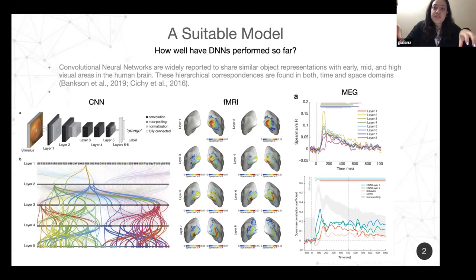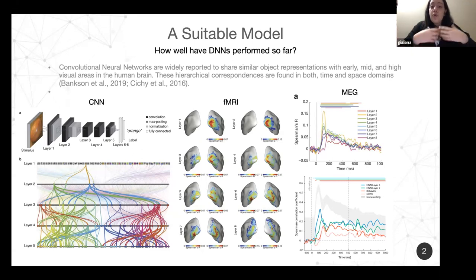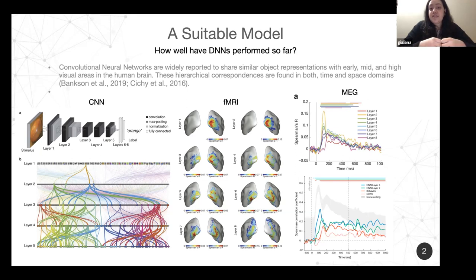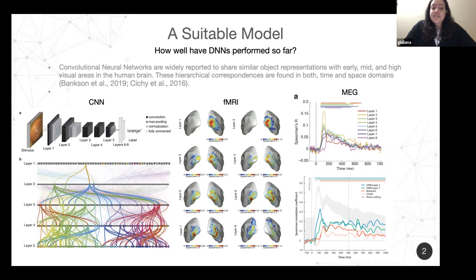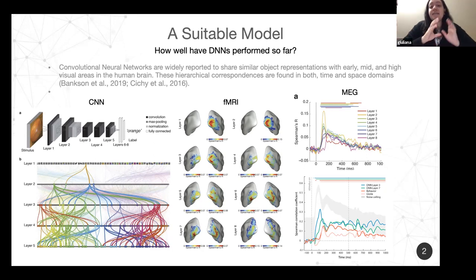From the first layer, this type of algorithm processes low-level visual features like directions and colors. As you go deeper into the neural network, more complex features are processed. For example, if you are training your neural network to recognize faces, in the most deep layers you have representations of different eyes, lips, mouths, and noses. Sishi trained this neural network with different types of objects, extracted features from each layer for each image, and then calculated the distance between the features from each layer.